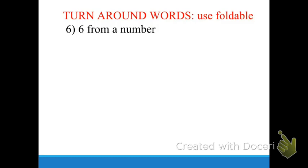The first one says 'less than.' The second one says 'from' — that's the hard one to remember. And the third one says 'fewer than.' Two of them use the word 'than': less than and fewer than, but also the word 'from.' That means we're going to flip-flop the order when we see these. So, in this case, we have 'six from a number.' I want you to circle any turnaround words you see. Circle the word 'from.'